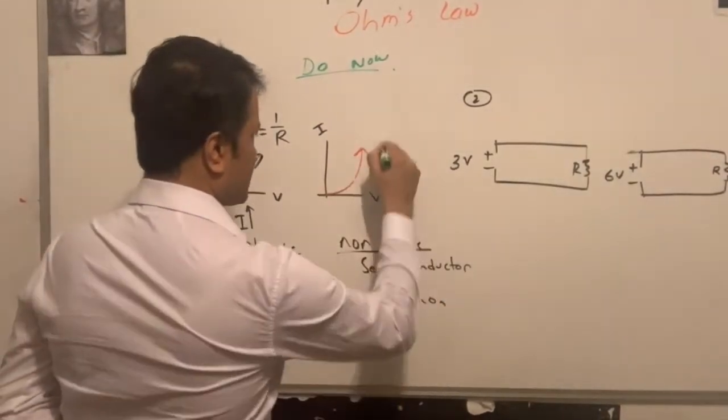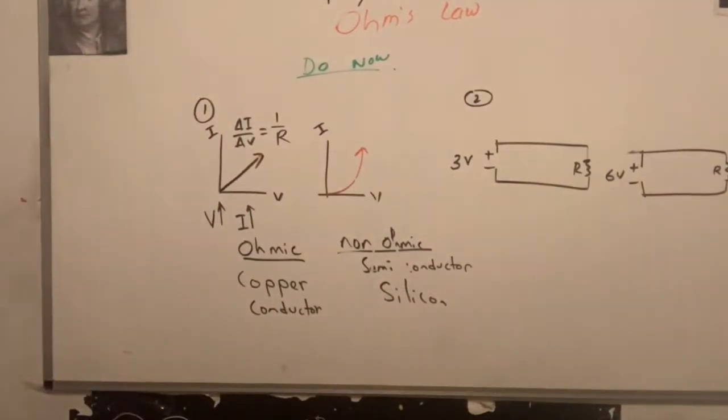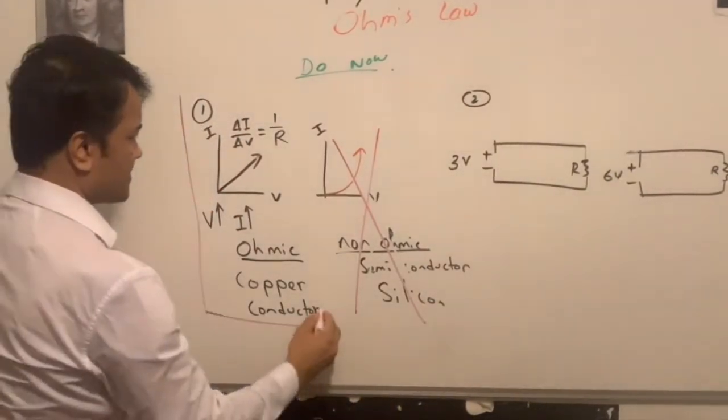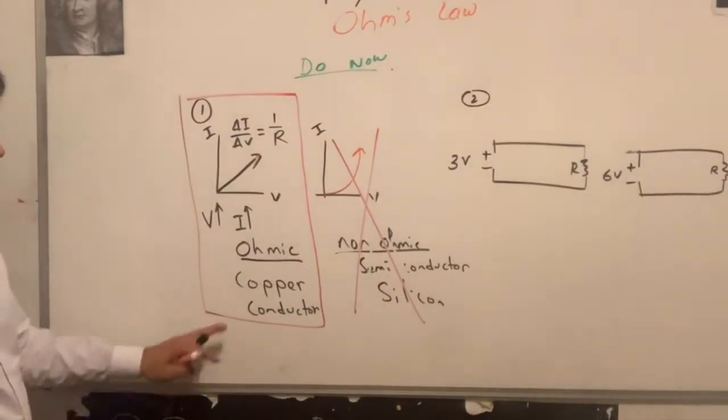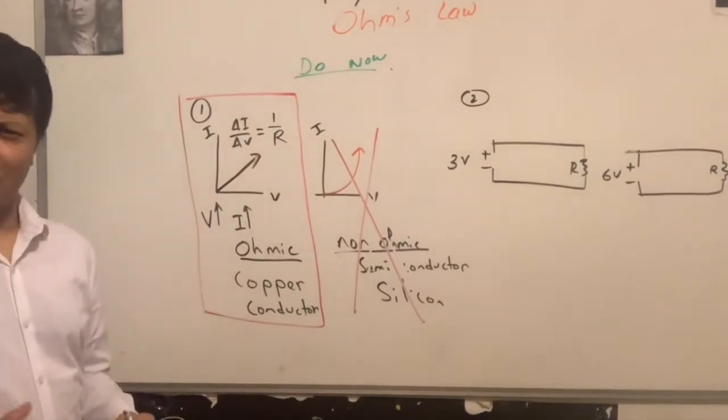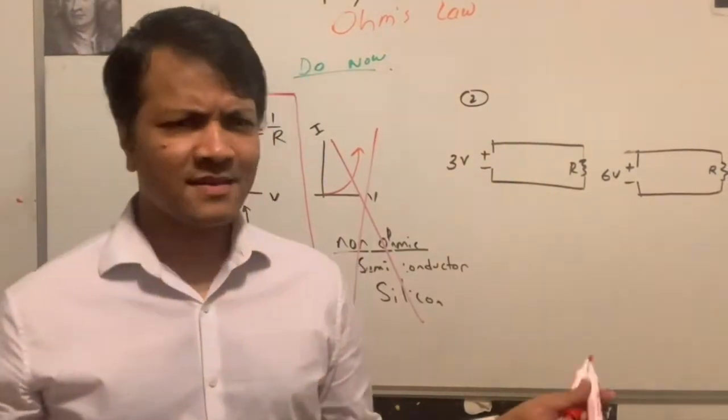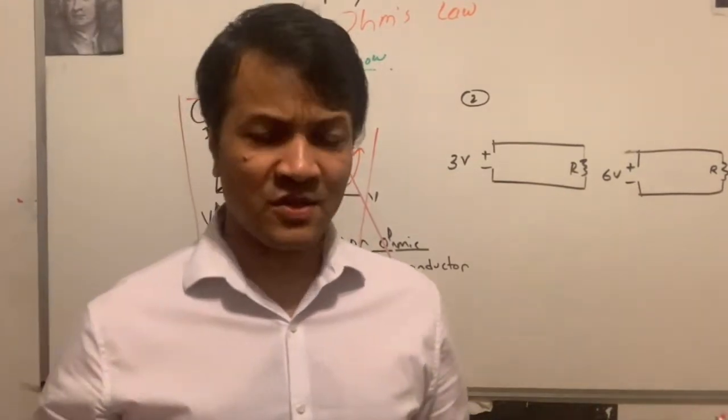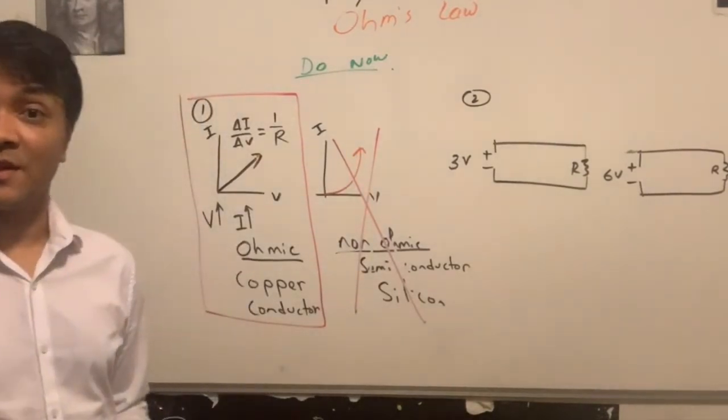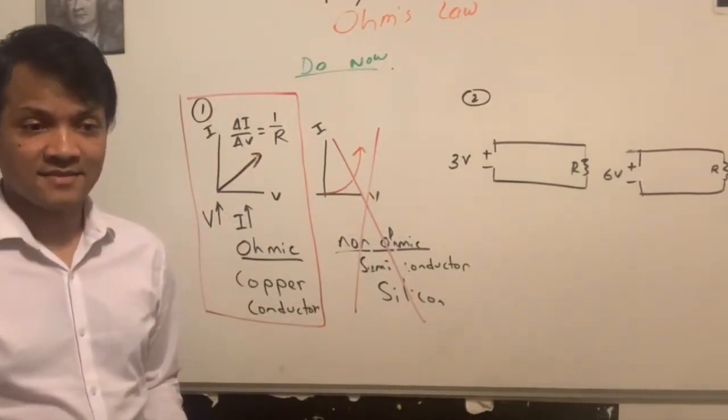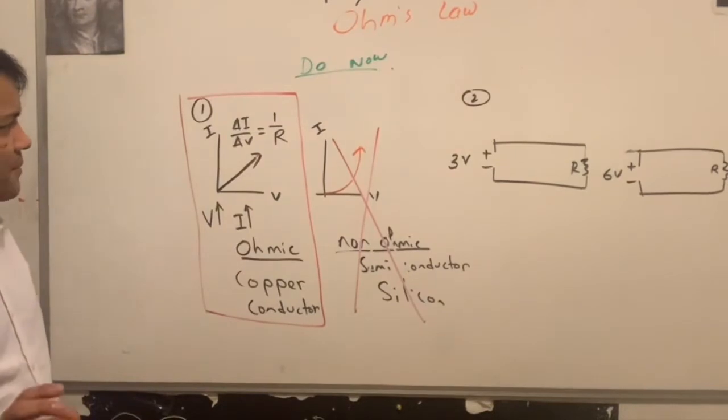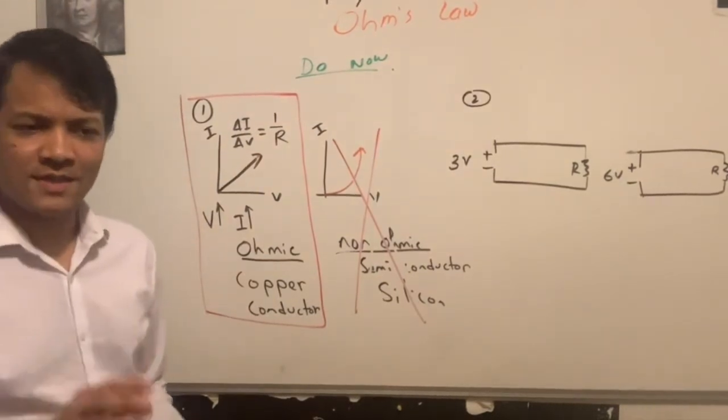Now this doesn't, non-ohmic, this one doesn't obey the Ohm's law. This one does not obey the Ohm's law. It should be arrested. But this one does obey the Ohm's law. It's about the law. So the conductor made out of metals obey the Ohm's law.